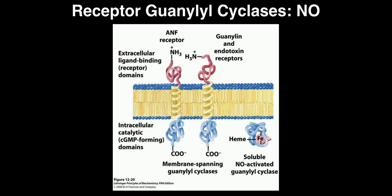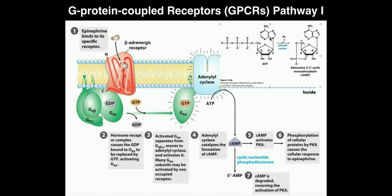This reaction is completely homologous to that of adenylyl cyclase — or adenylate cyclase — except that the adenine is replaced with guanine. So we start with GTP and produce cyclic GMP.